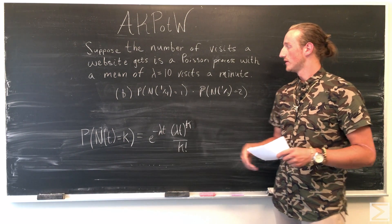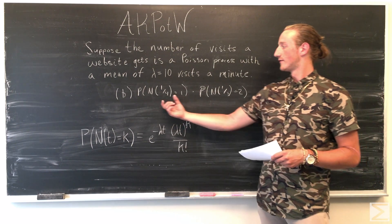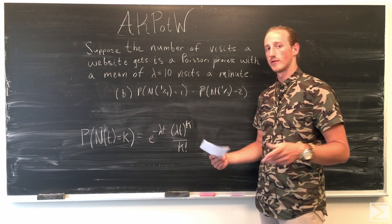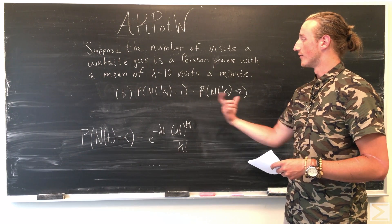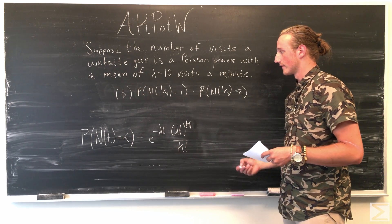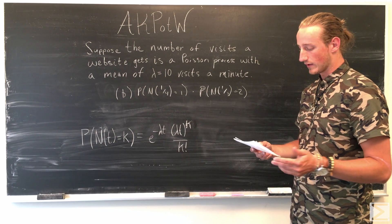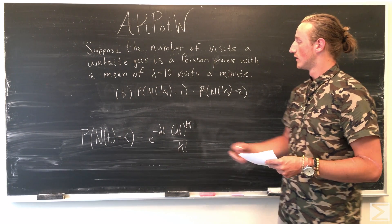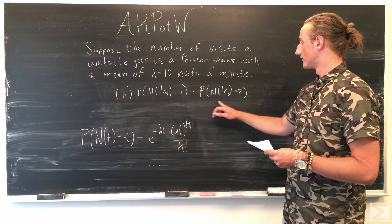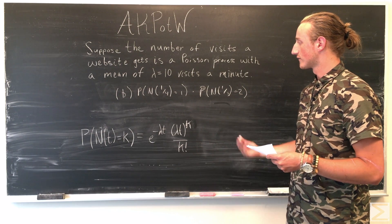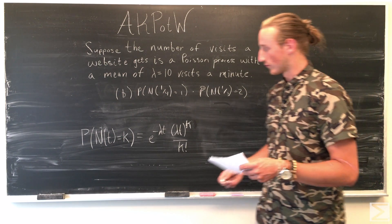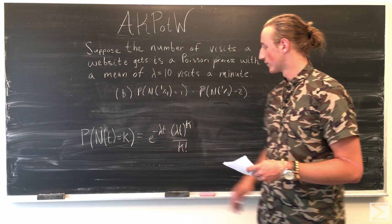For Part B, since these two events are independent, we can compute the two event probabilities separately and multiply them together to get the total probability that there's one call in the first 15 seconds and two calls in the next 20 seconds after that. Let's go ahead and plug that into our Poisson distribution.